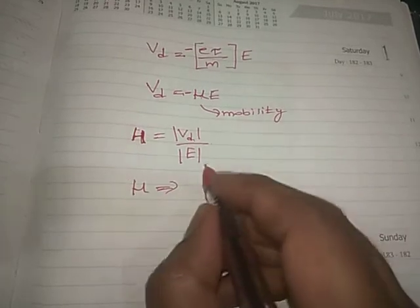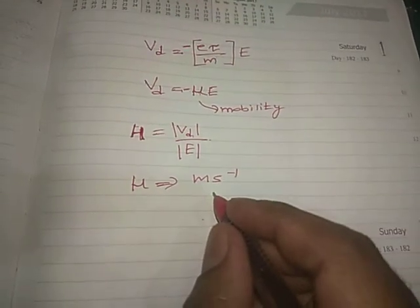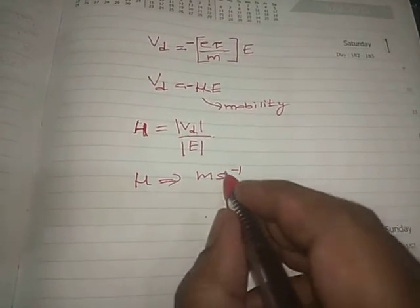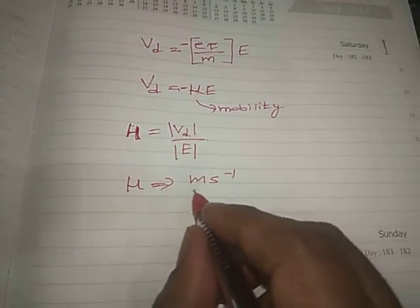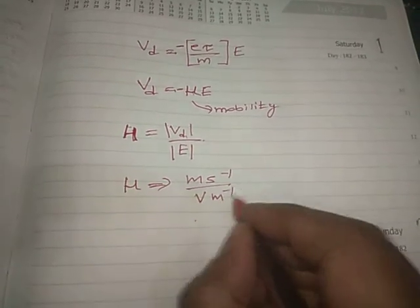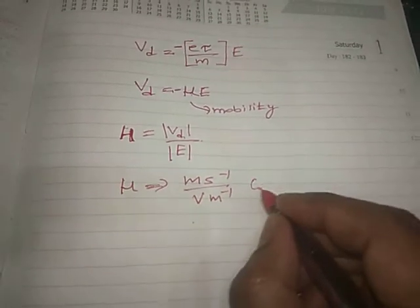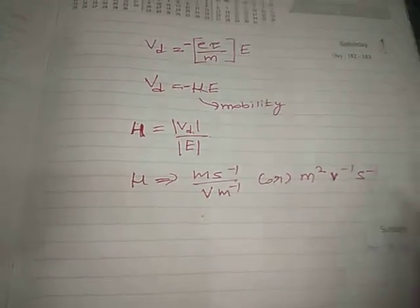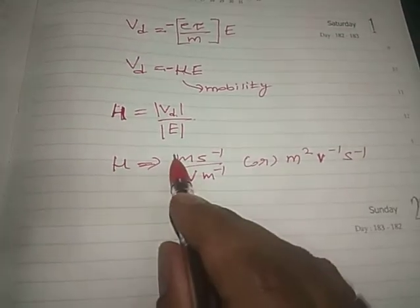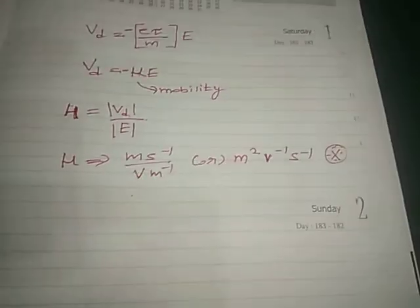Vd is drift velocity with unit meter per second. The electric field has unit V m to the power minus 1, or N C to the power minus 1. So the unit of mobility is: meter per second divided by V m⁻¹, which gives m² V⁻¹ s⁻¹. This is the unit for mobility.